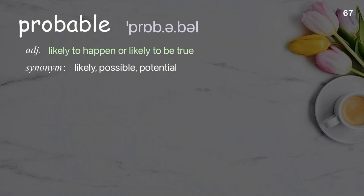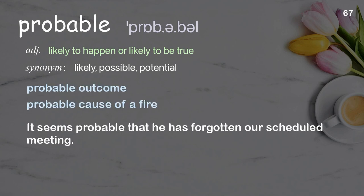Probable: likely to happen or likely to be true. Examples: probable outcome; probable cause of a fire; it seems probable that he has forgotten our scheduled meeting.